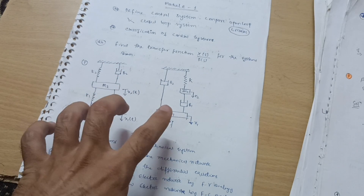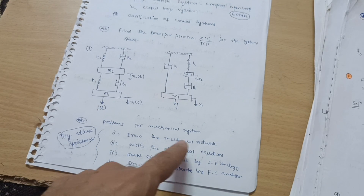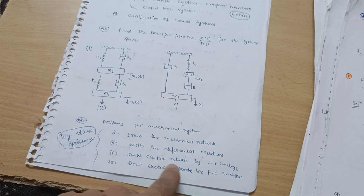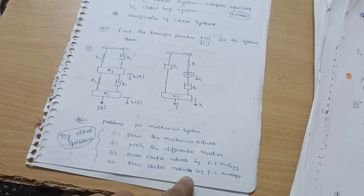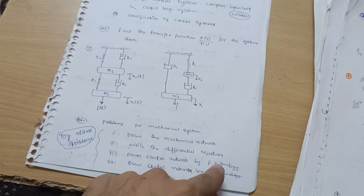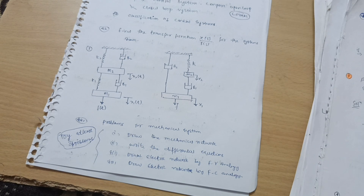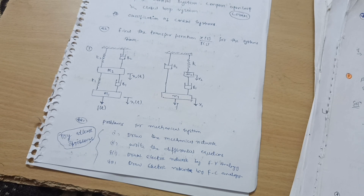For mechanical system problems, a diagram will be given and you have to draw the mechanical network, write differential equations, draw the electric network by force-voltage analogy, and draw the electric network by force-current analogy. Force-voltage analogy is the most important one. Try at least three problems. If you cannot find problems, comment down and I will share the most important ones.